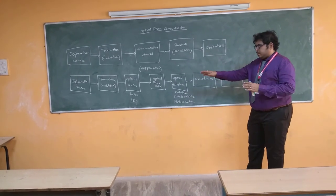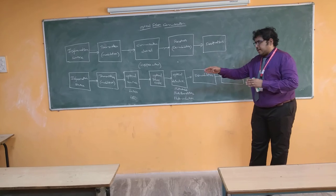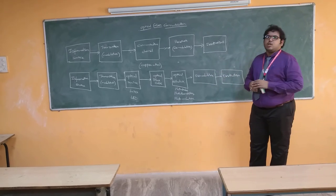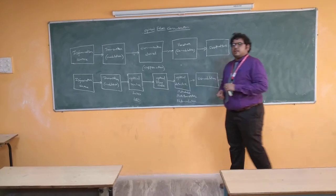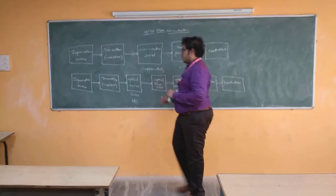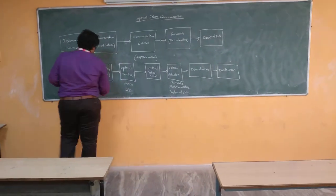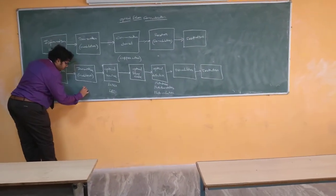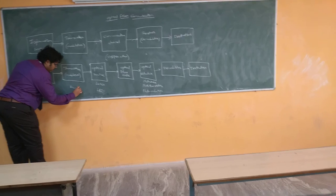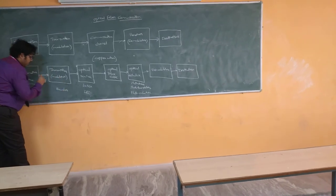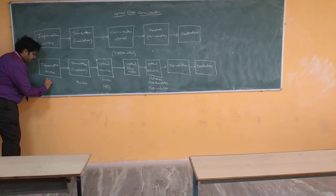So those are the main advantages of shifting from a basic communication channel to an optical fiber communication channel. This particular block diagram describes an analog transmission. When considering digital transmission, an encoder will be used, and the information signal will be of a digital format.